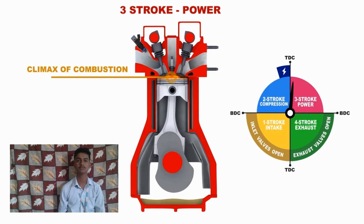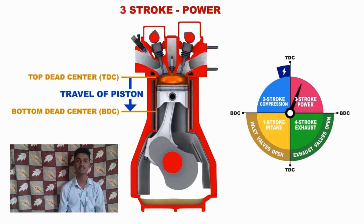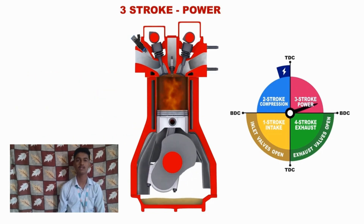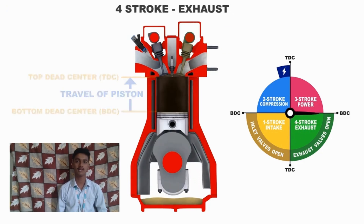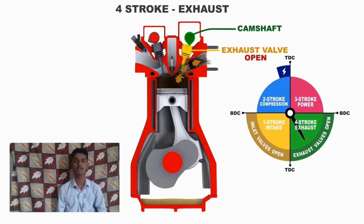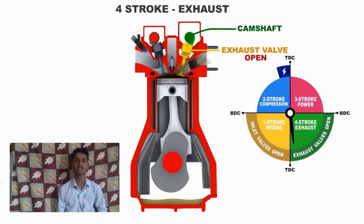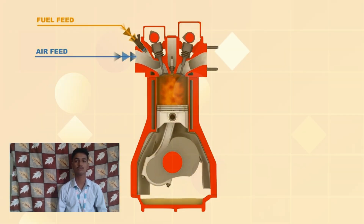The third step is the power stroke: a spark from the spark plug ignites the compressed mixture, causing a small explosion. This explosion pushes the piston down with great force, generating power to turn the vehicle's wheels. The fourth process is the exhaust stroke: the piston moves back up to push out the burned gases through the exhaust valve, clearing the cylinder for the next cycle to begin. The Otto cycle repeats continuously as long as the engine is running, allowing vehicles to move efficiently.